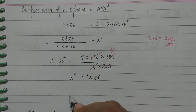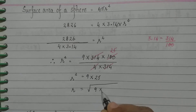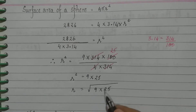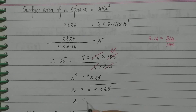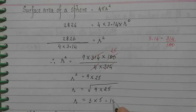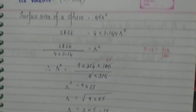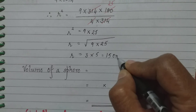Now if r² is 9 into 25, then r will be the square root of 9 into 25. We know the square root of 9 as well as the square root of 25. Square root of 9 is 3, square root of 25 is 5, so 3 into 5 equals 15. The units given are centimeters, therefore r equals 15 centimeters.